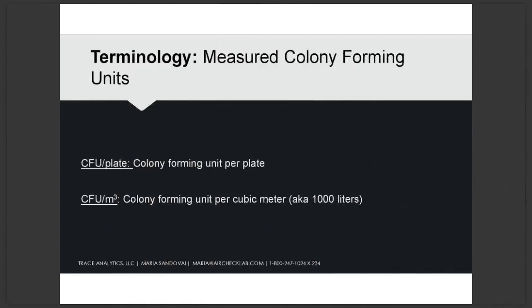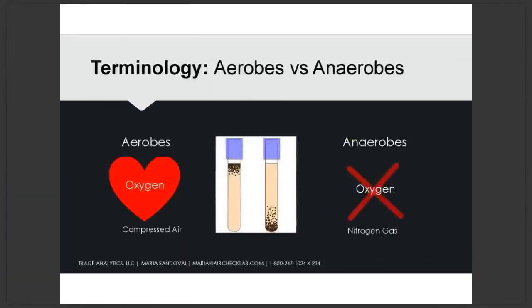CFUs can be reported as CFU per plate or CFU per cubic meter. A cubic meter is equivalent to 1,000 liters — so often it's in terms of 1,000 liters of air sampled onto the media. When you see CFU per cubic meter, you can make the logical leap that it is an actual air sample. If you see CFU per plate on your report, you can make the leap that no air was in contact with the plate.